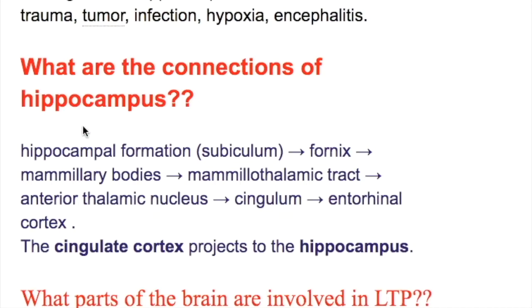What are the connections of the hippocampus? The hippocampus is connected to the fornix, to the mammillary body, and through the mammillothalamic tract to the anterior thalamic nuclei, and then to the cingulum and then to the entorhinal cortex.